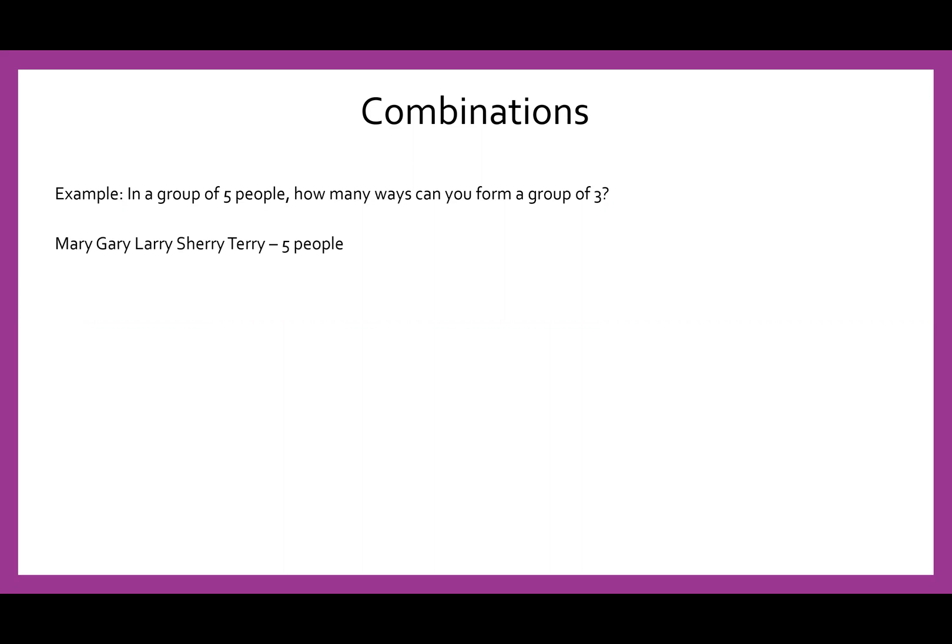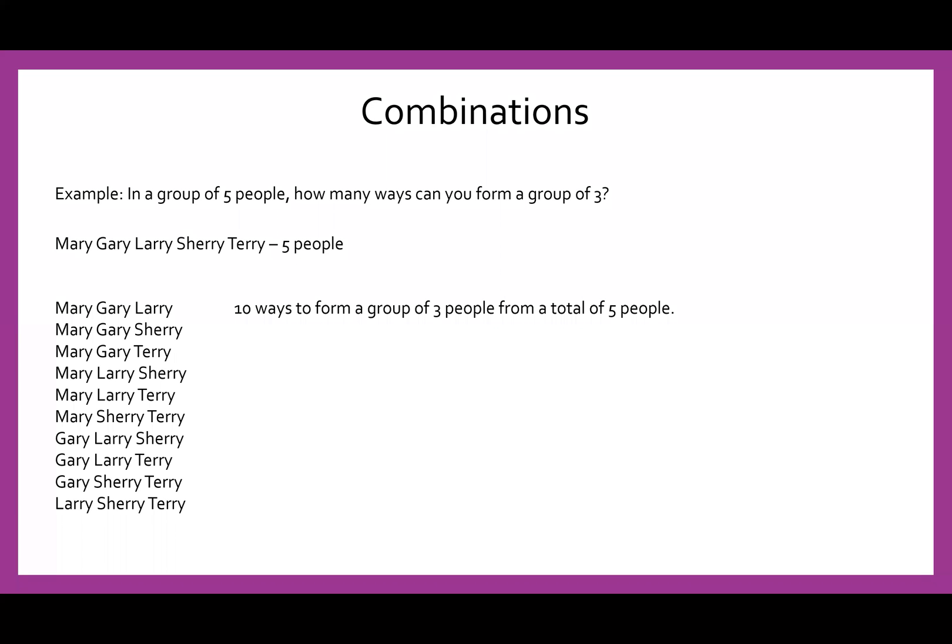So if we have five people, Mary, Gary, Larry, Sherry, and Terry, I want to choose three of them. These are all the ways I can choose three people. So I can have Mary, Gary, Larry, Mary, Gary, Sherry, Mary, Gary, Terry, Mary, Larry, Sherry, Mary, Larry, Terry, Mary, Sherry, Terry, Gary, Larry, Sherry, Gary, Larry, Terry, Gary, Sherry, Terry, Larry, Sherry, Terry. And so there's 10 ways to do that. It's very exciting.